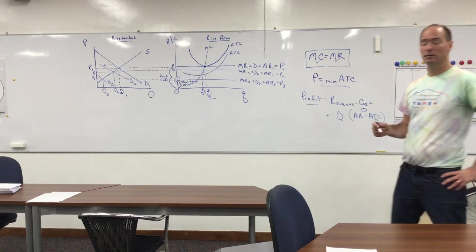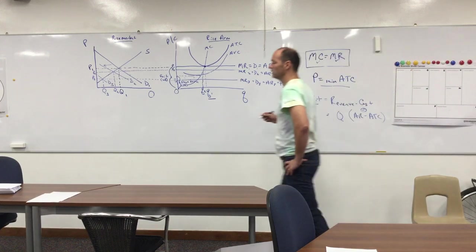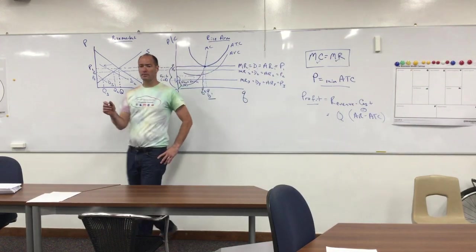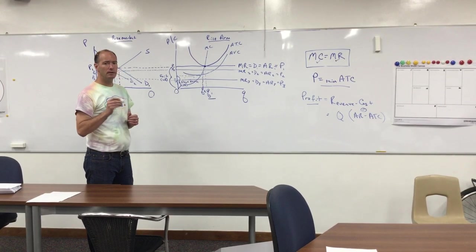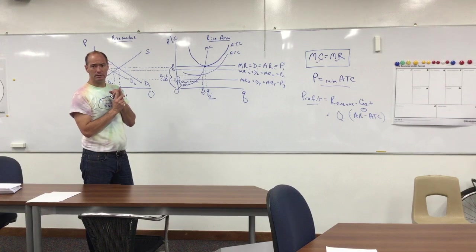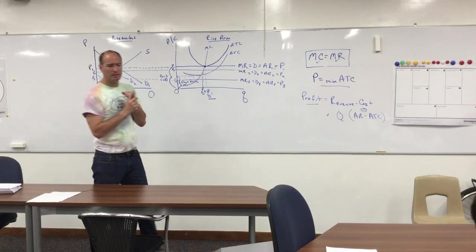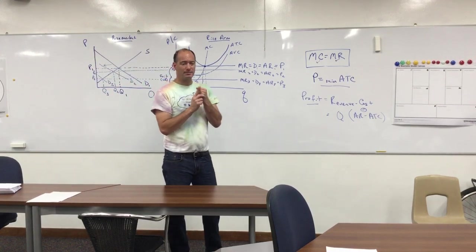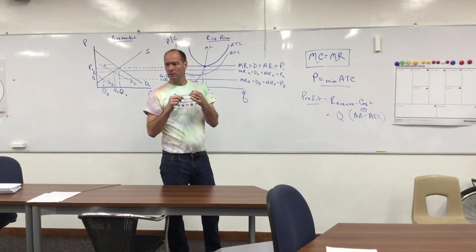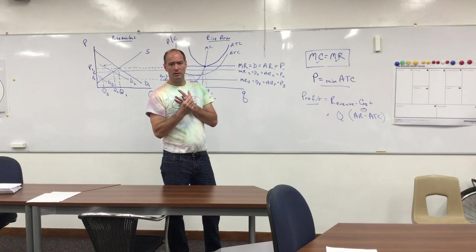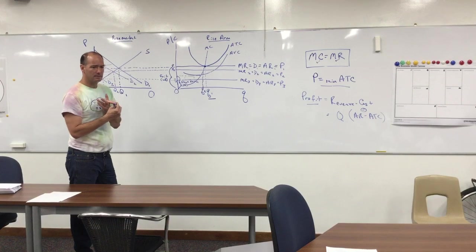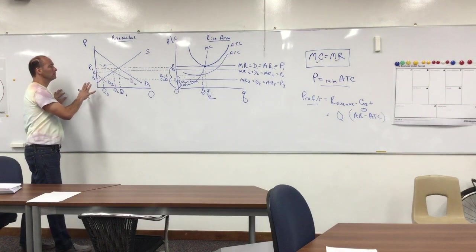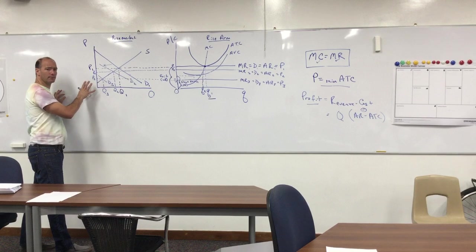Today's topic is perfect competition in the short run. The main things you want to know when we finish are how a business makes its decision about maximizing profits, how to understand allocative and productive efficiency in perfect competition, and when the firm shuts down versus when it exits.